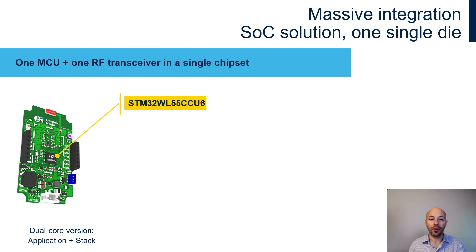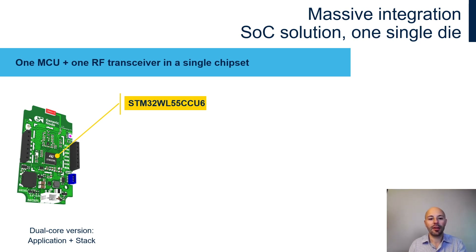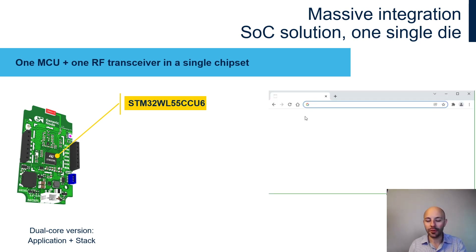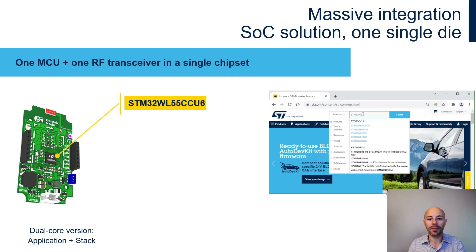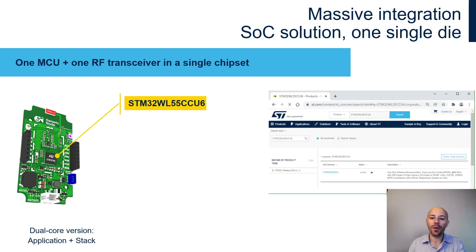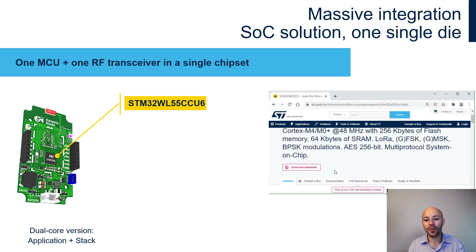As we have seen, the STM32WL integrates one MCU plus one RF transceiver in a single chipset. To know what is exactly inside, an easy way is to look at the part number. In our case, the part number is STM32WL55CCU6. We can go to ST.com, search for this part number, and we will reach the web page giving an overview of the product.